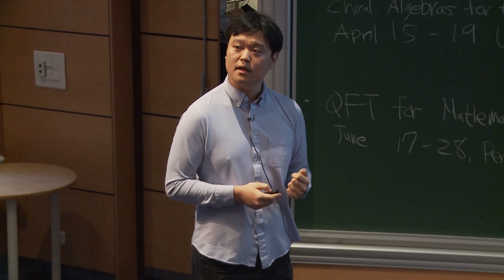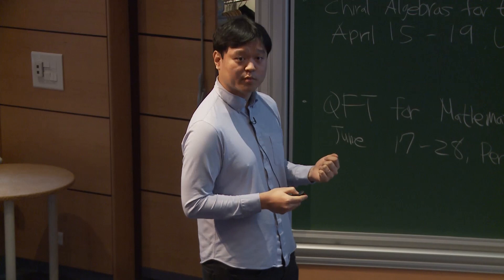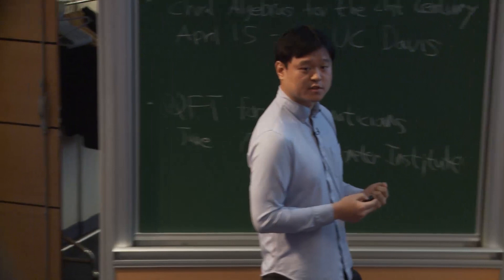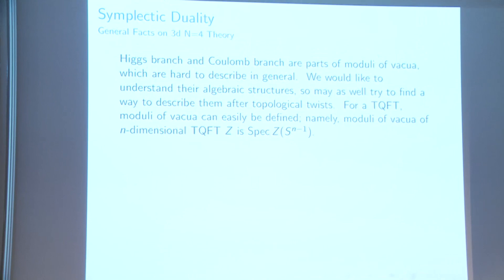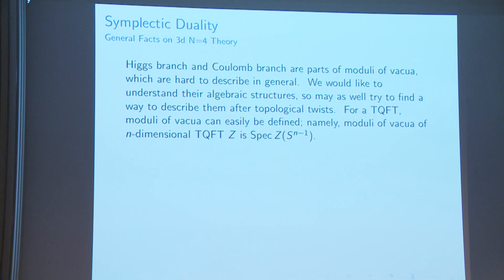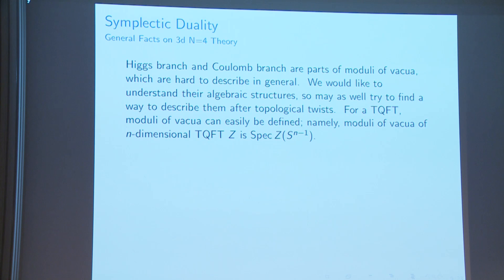What one means by twist in the TQFT context is clear. You can define the moduli of vacua as roughly the spectrum of a commutative ring given by what you assign to S^{n-1}. In the TQFT framework, Z is a functor, so this is a vector space with algebra structure from the configuration of spheres — think of it as a cup product and then take the spectrum.